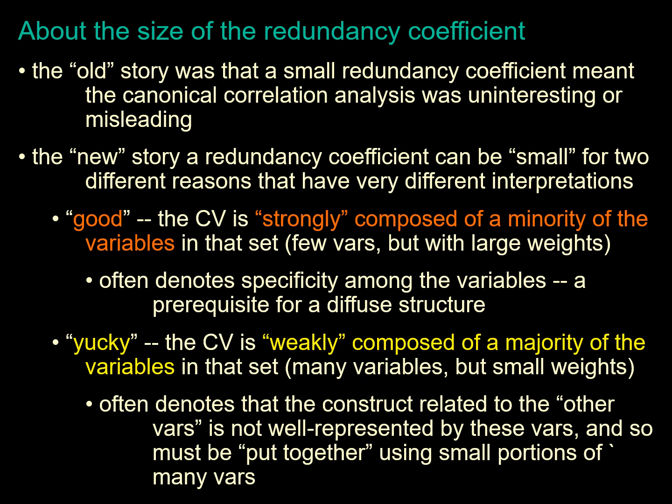The old story was that a small redundancy coefficient means the canonical correlation analysis was uninteresting or misleading. But the new story is that a redundancy coefficient can be small for two different reasons with very different interpretations. Either the canonical co-variation is strongly composed of a minority of variables in that set — often denoting specificity among the variables — or it is weakly composed, meaning the majority of variables in that set are not well represented by the canonical variable. Ultimately, we are trying to find similarity in a linear combination so that we can efficiently retrieve new features using this canonical analysis.